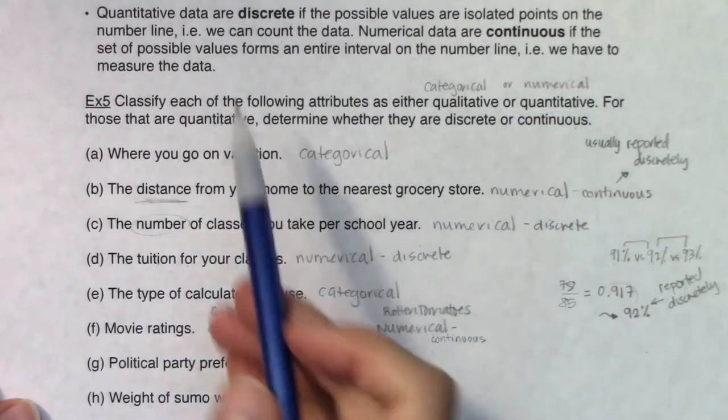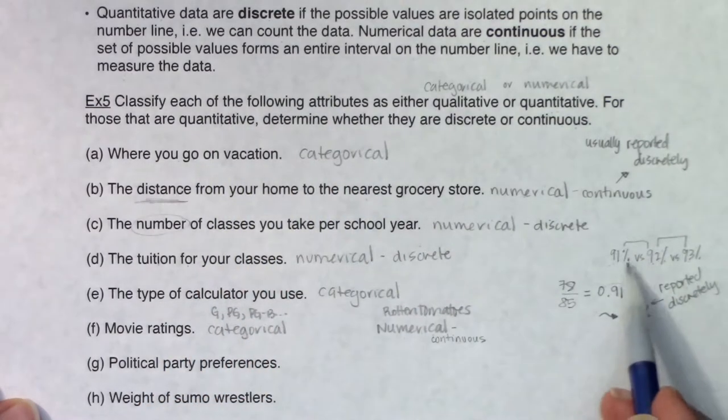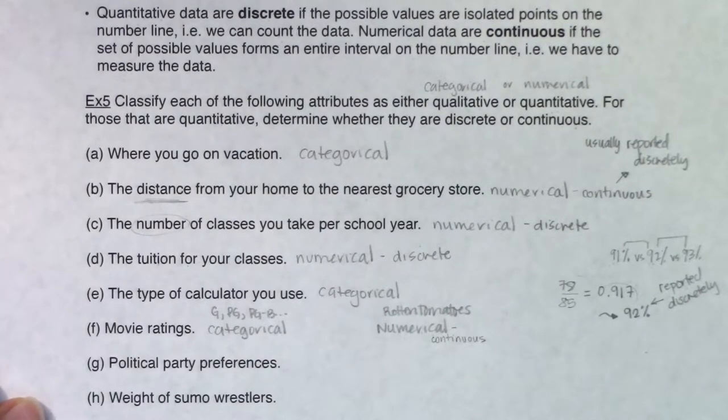If I look back to this original definition of discrete, you're discrete when you have isolated points on the number line. But when you have these decimals, you can be an entire interval on the number line. There's no stopping the options there. With that, take a moment, pause the video, and see if you can figure out the next five questions.